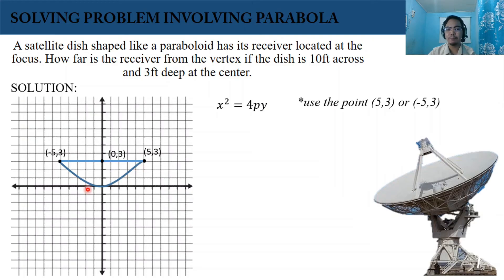We can use one of them and substitute the values of x and y. So we have 5² = 4p(3). I'll use this point (5, 3).